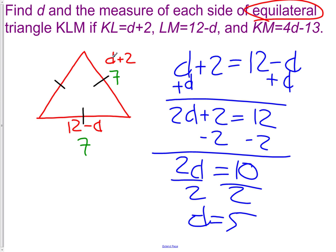Our last side of our triangle was 4d-13. 4 times 5 is 20. 20 minus 13 is 7.